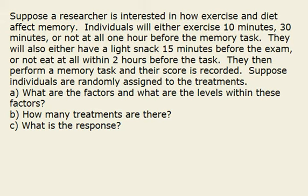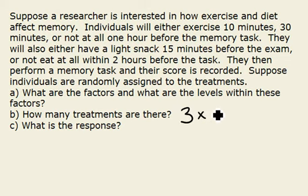That will determine how many treatments there are. If you take the number of levels for each of your factors and multiply them, that tells you how many treatments you have. We have three levels for exercise, multiplied by two levels for diet, giving us a total of six treatments.